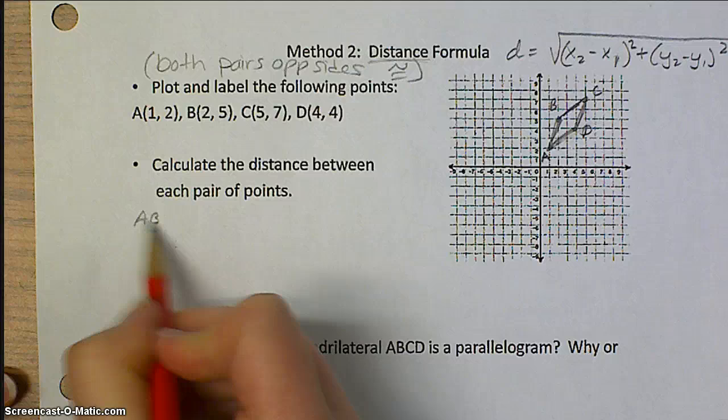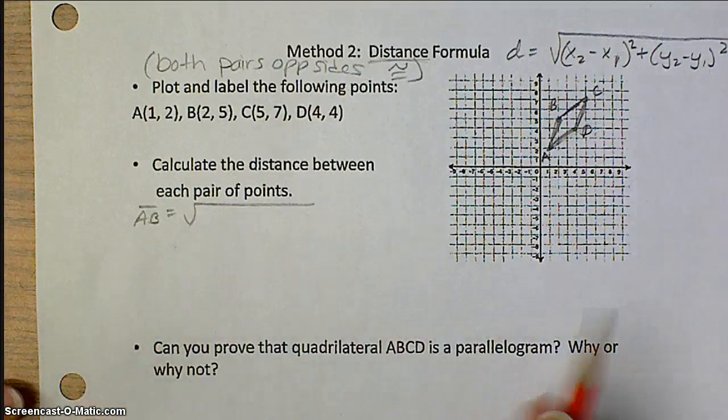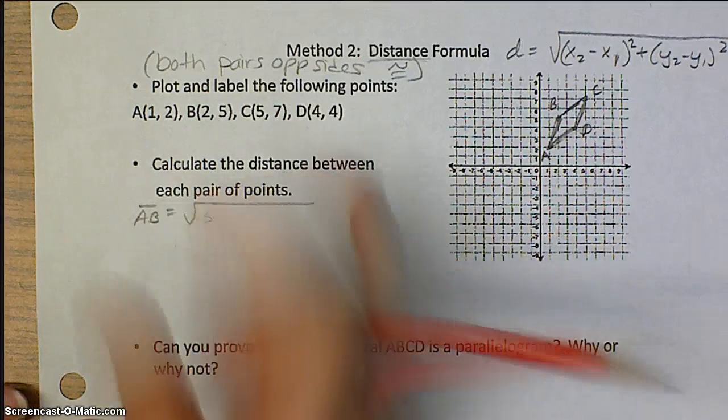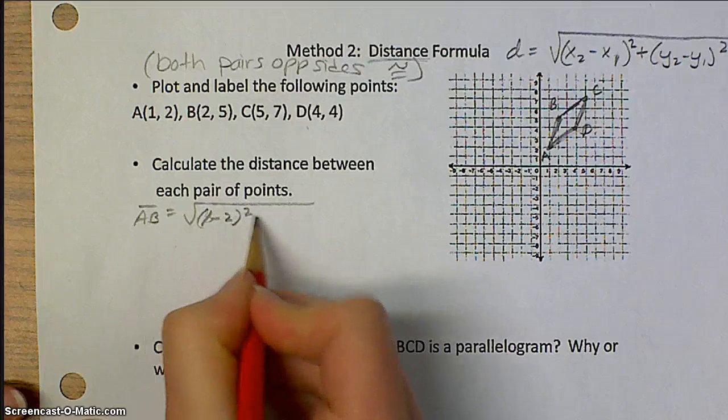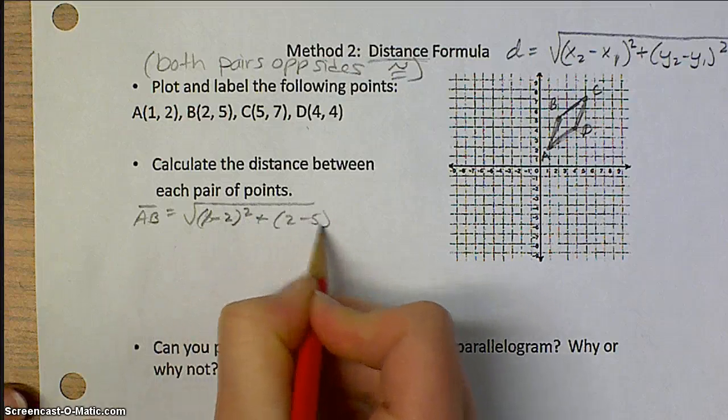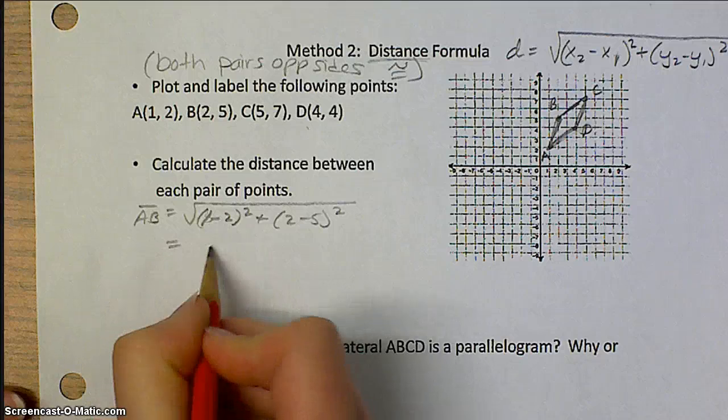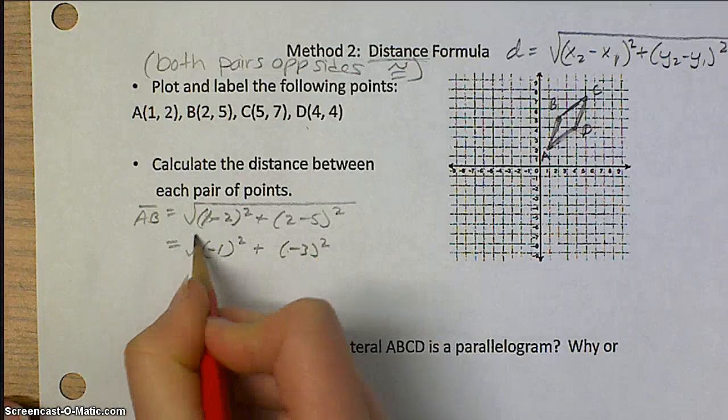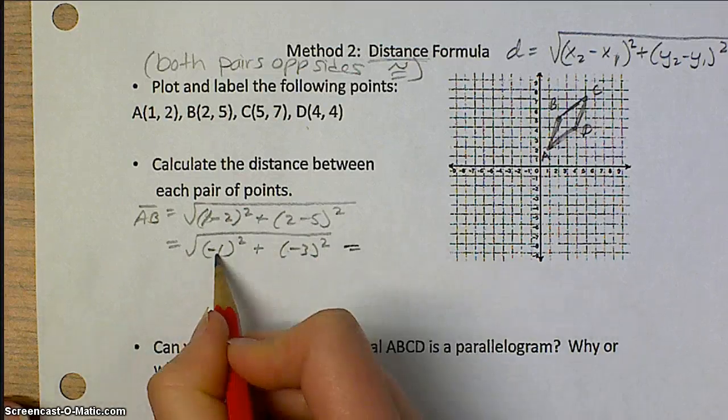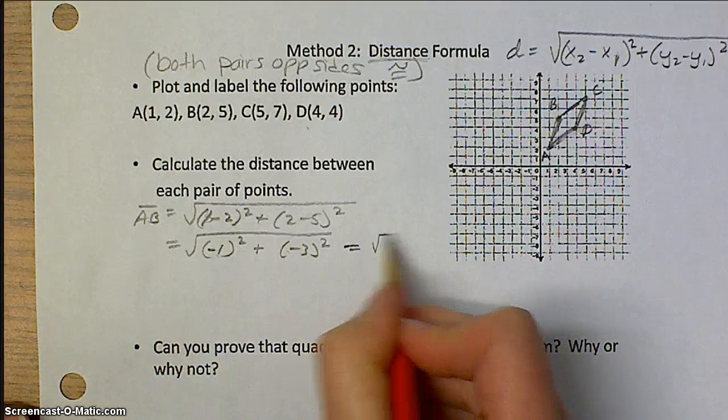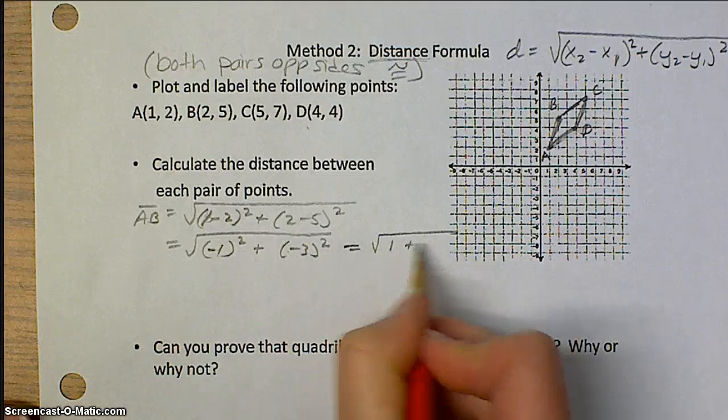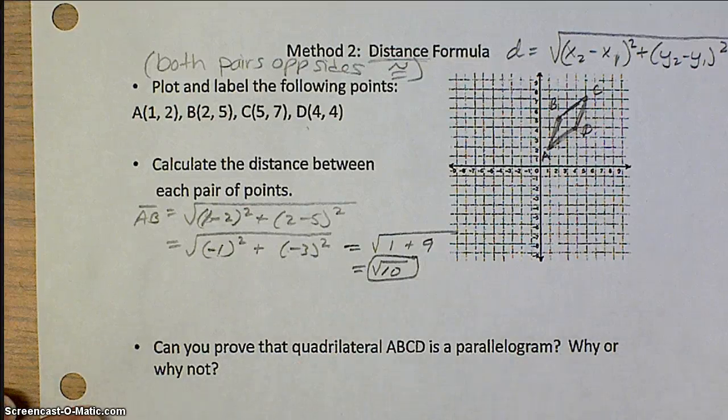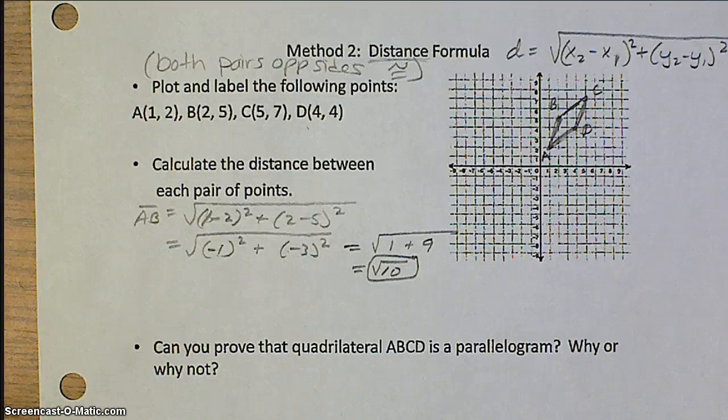So I need to find all four distances. I'm going to start with AB. And then plug right into your distance formula. So 1 minus 2 squared, 2 minus 5 squared. Watch your signs. So this is negative 1 and negative 3 all under the square root. Negative 1 squared is really a positive 1. And negative 3 squared is really a positive 9. So this comes out to be the square root of 10. Go ahead and pause the video and then find the distance of each of the other three sides.